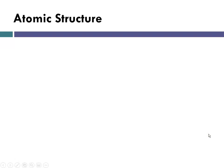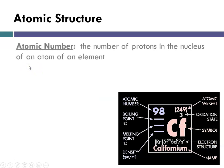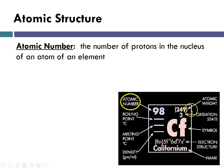When we talk about atomic structure, quite a bit of information is given to us when we look at the periodic table. The first thing we notice is the atomic number, and depending on which periodic table you're looking at, it's either going to be in one corner or the other — the top or the bottom. The atomic number is generally an integer because it tells us the number of protons in the nucleus of an atom of an element.